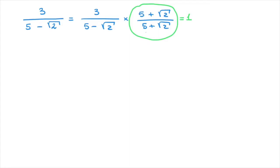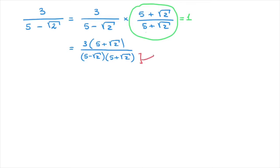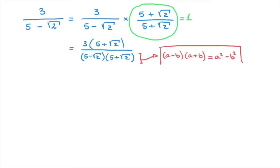Let's carry on with this calculation. This leads to 3 times (5 plus the square root of 2) over (5 minus the square root of 2) times (5 plus the square root of 2). This denominator is in the format a minus b times a plus b, and that corresponds to the difference of two squares — that is, this equals a squared minus b squared. If you don't remember that formula or you're unfamiliar with it, you definitely want to make a note of this now. This is known as the difference of two squares, and it is an absolute must-know when learning how to rationalize denominators.